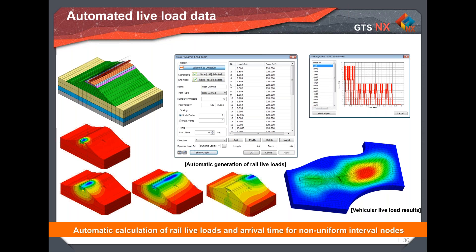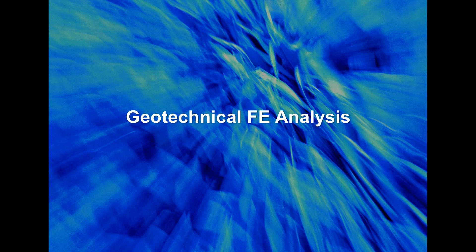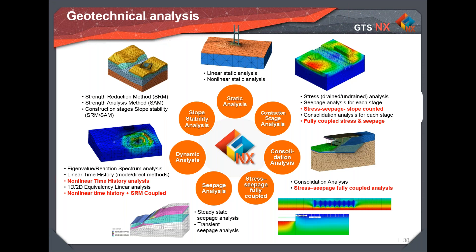Post-processing tools in GTS NX provide contour plots, flow lines, and cutting plane or cutting line diagrams to extract bending moments and axial forces from plate elements. Results can be probed at any point to find maximum or minimum settlement values, exported to Excel for graphs, or graphed within the software. ISO surfaces can be used to identify areas settling beyond a particular threshold value.